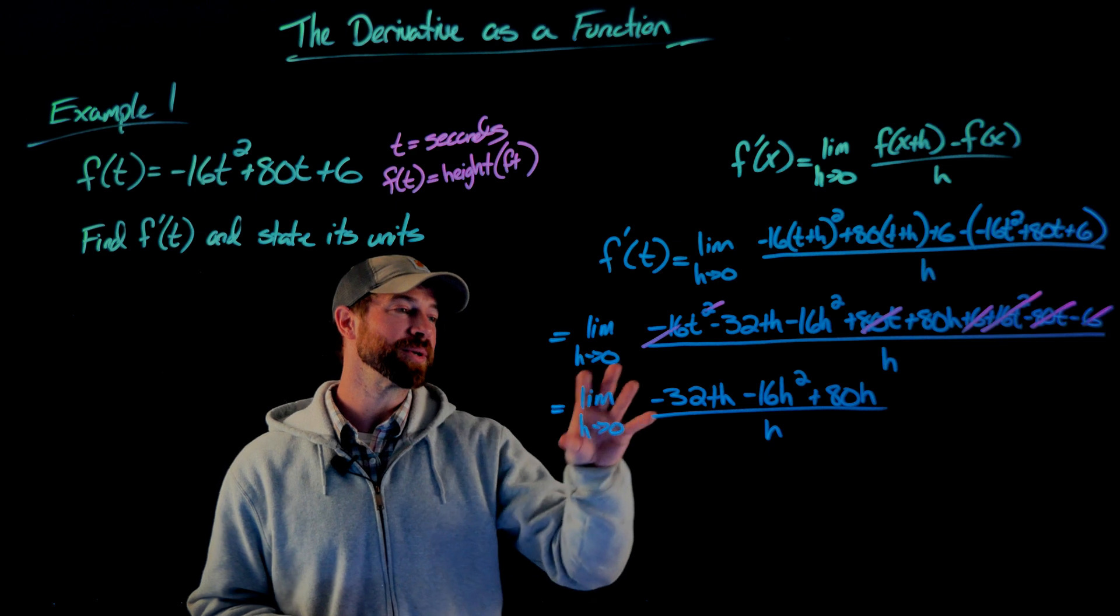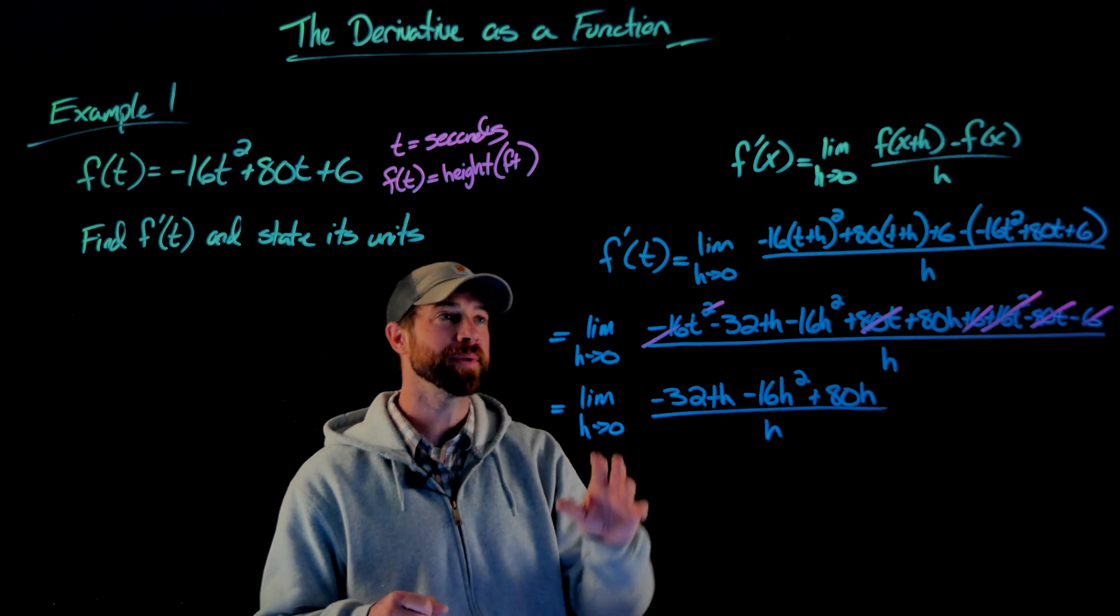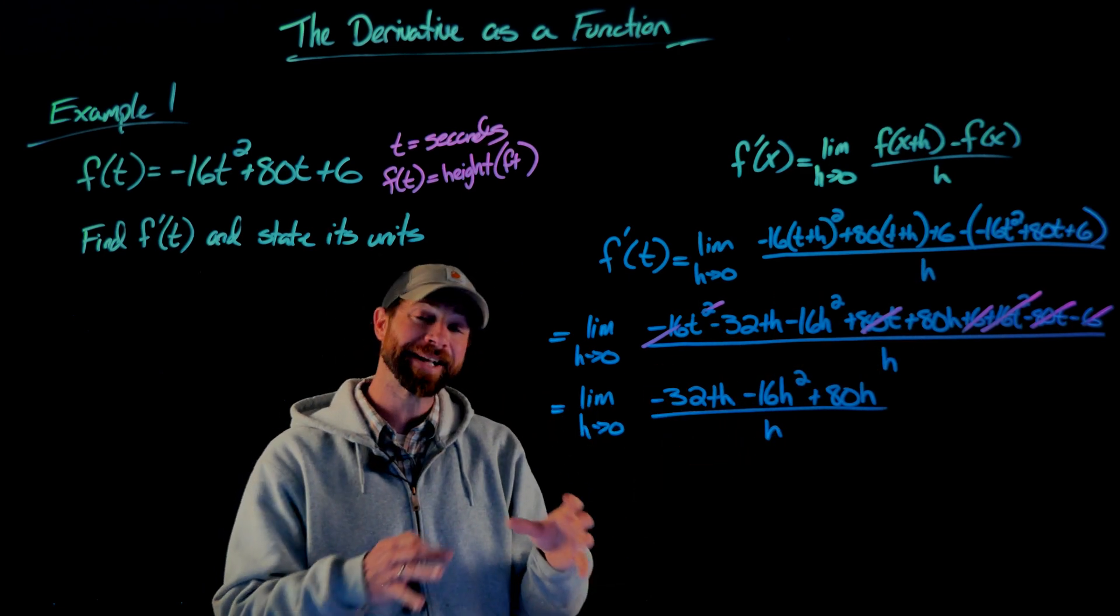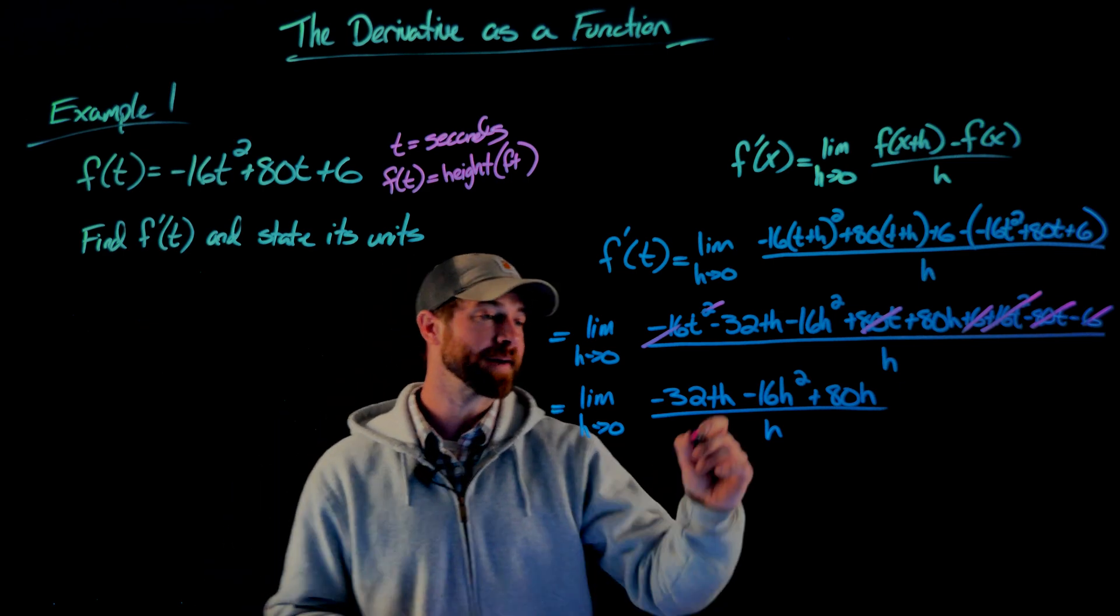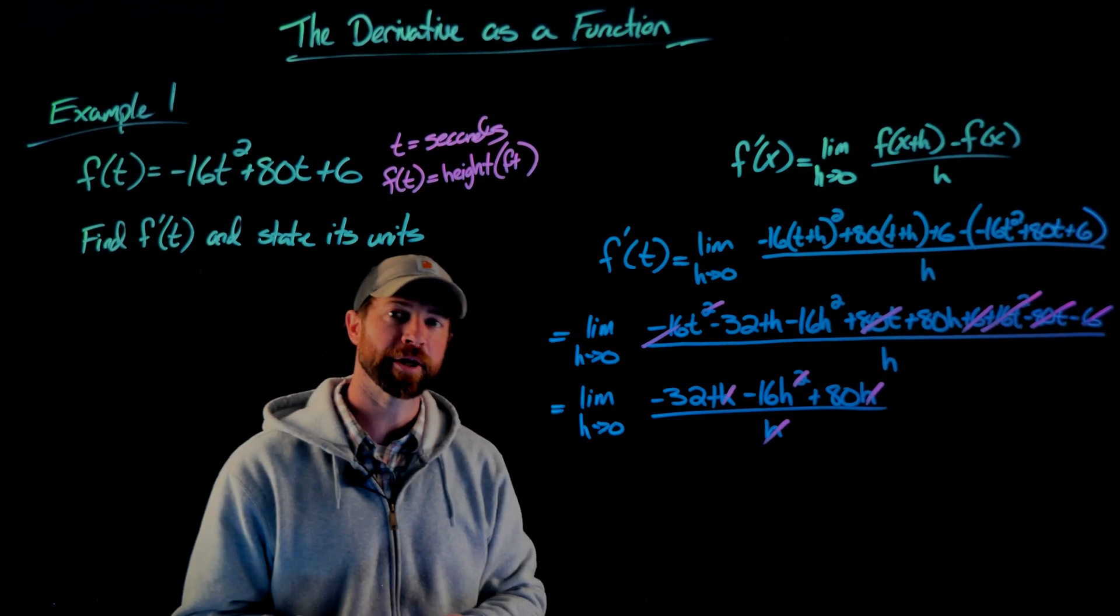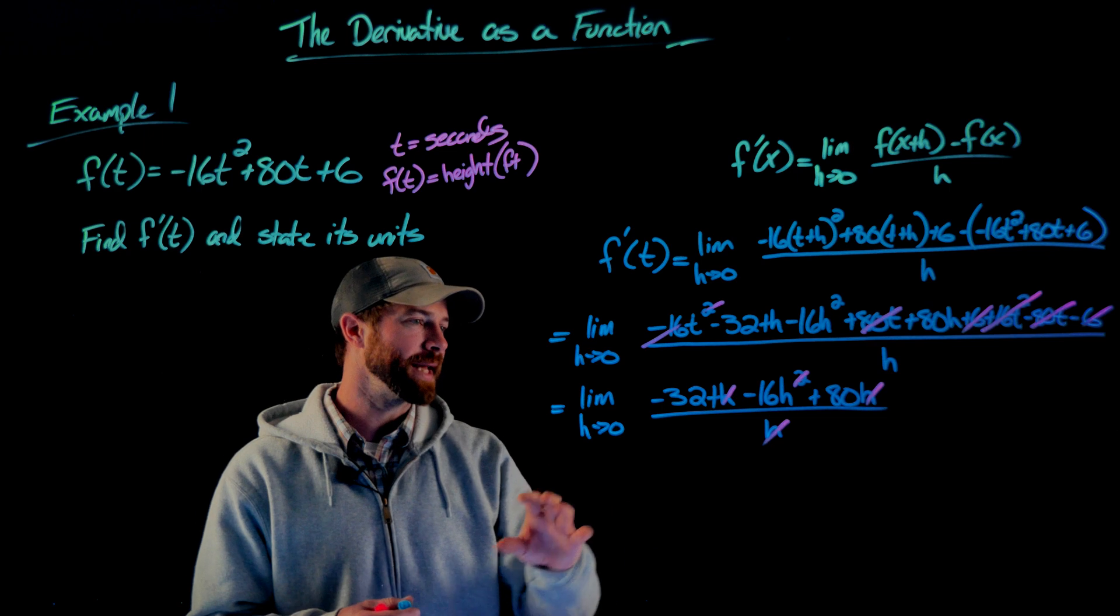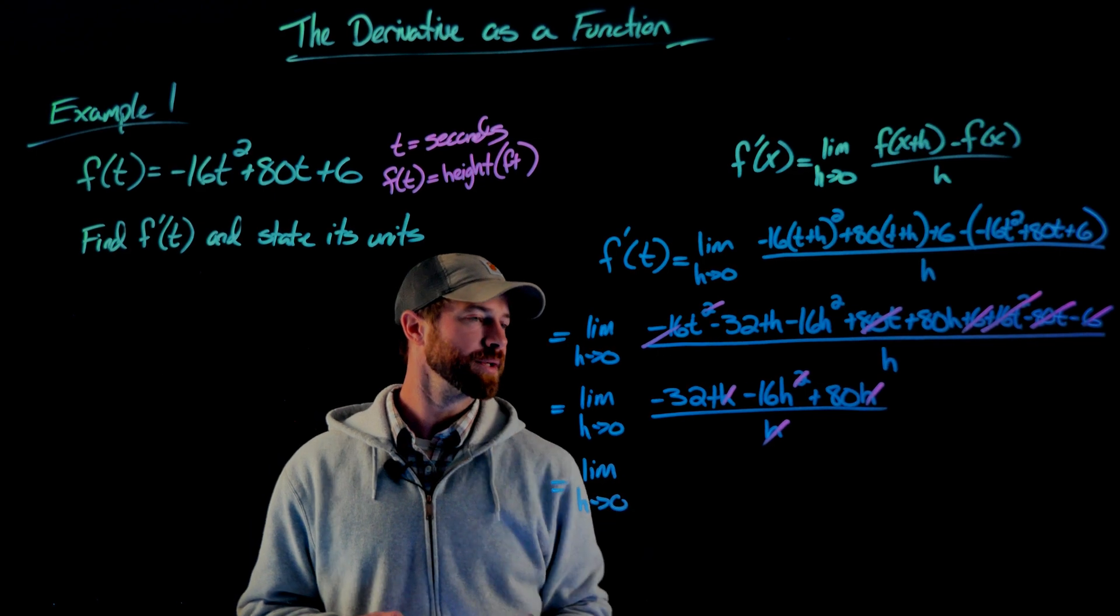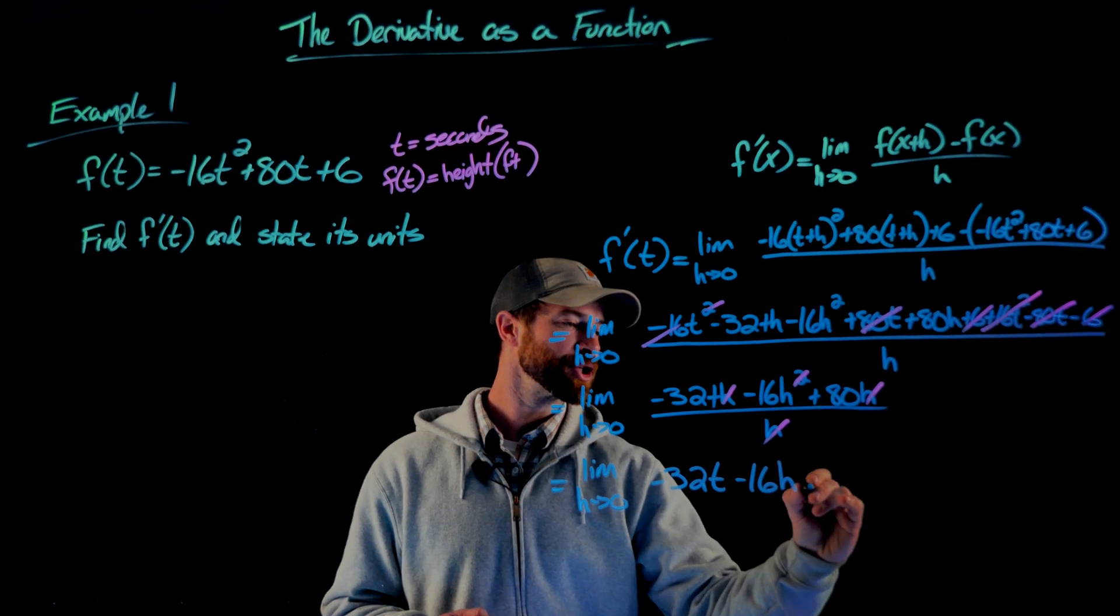All right, now what we're going to do is we're going to cancel a factor of h between the numerator and denominator. By the way, this is the entire hope for this problem. The reason we couldn't evaluate this limit in the beginning was because our denominator was going to zero. If we can somehow cancel out this factor of h in the denominator, then we have no issues computing this limit. So if I cancel a factor of h between the numerator and each term in the numerator and the denominator, that's equivalent to factoring out a factor of h and then canceling it with the denominator. What I'm left with then is a 1 in the denominator, and in the numerator here, what I have as h goes to zero, I have negative 32t minus 16h plus 80.